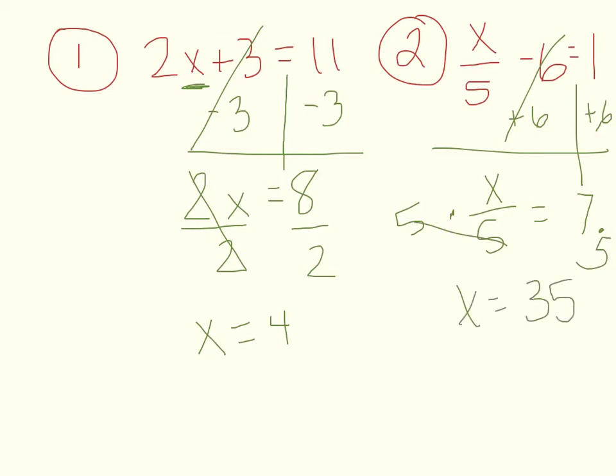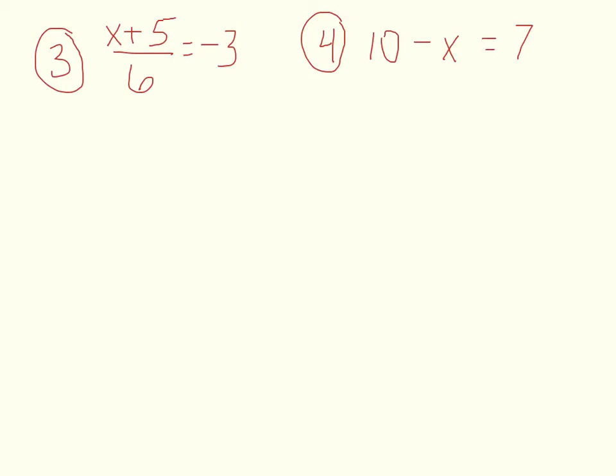2 more. Number 3, x plus 5 over 6 equals negative 3. Now normally I would say we're going to get rid of the adding first, but because it's all over 6, it's kind of like it's in parentheses. So we need to get rid of the 6 first, since it's the whole thing.